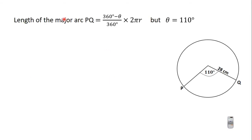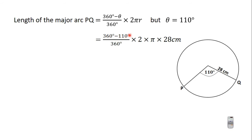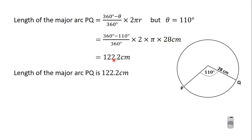For the major arc, the length of the major arc PKO is equal to 360 degrees minus theta, divided by 360 degrees, times 2πr. We know that theta is 110 degrees, so this gives us 360 degrees minus 110 degrees, divided by 360 degrees, times 2 times π times 28 centimeters, since r is 28 centimeters. When you do this on your calculator you are going to have 122.2 centimeters.